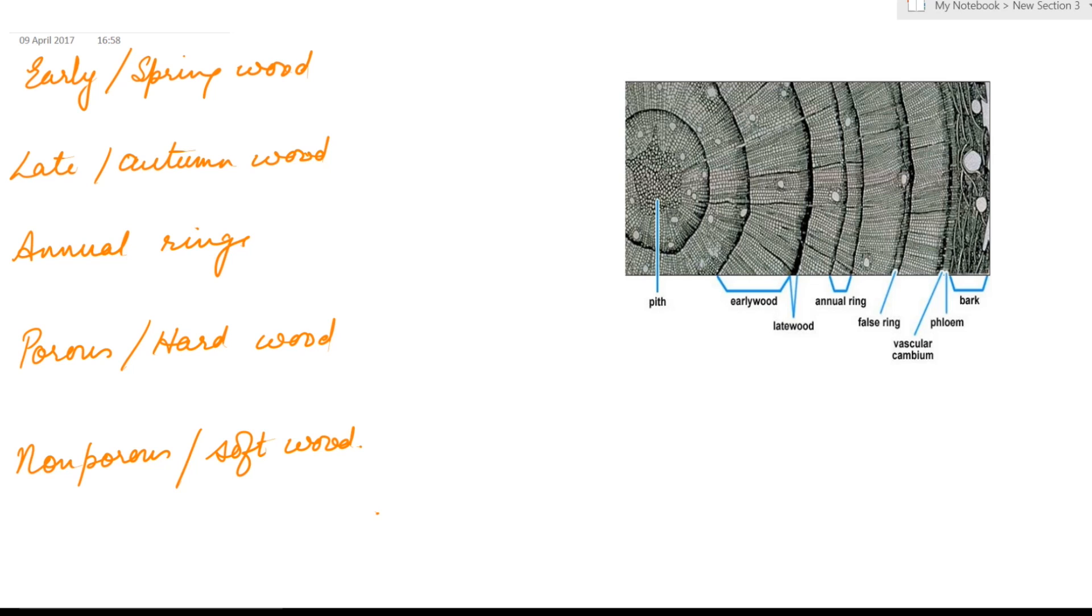Now in plants where secondary growth occurs, the wood grown during the summer season is known as early wood or spring wood. They have wider cavities and are lighter in colour. While the wood formed in the winter is known as late wood or autumn wood. They have narrow cavities and are darker in colour.